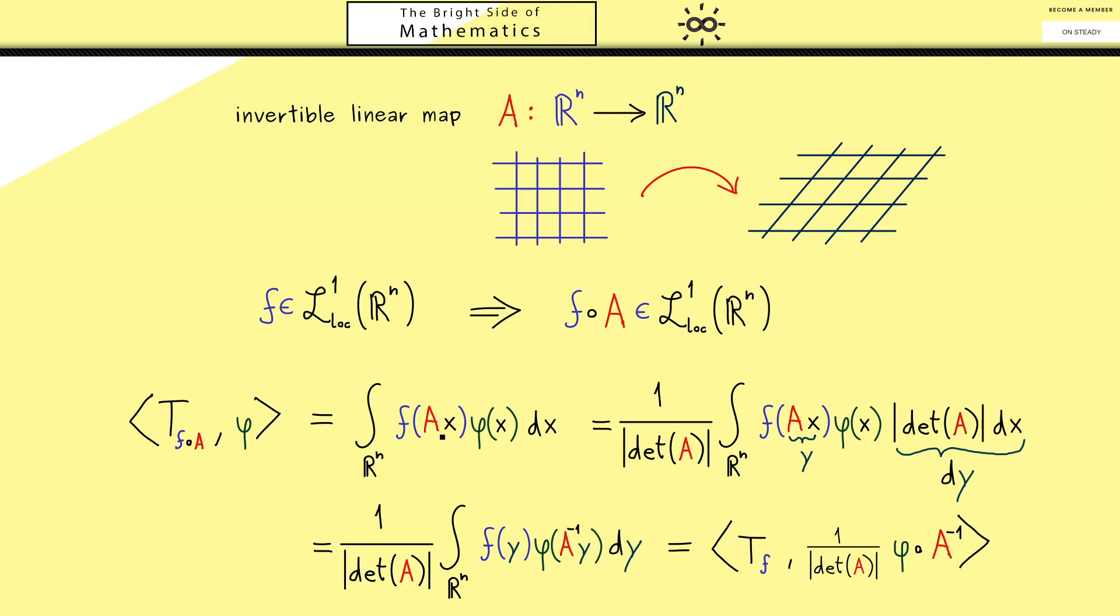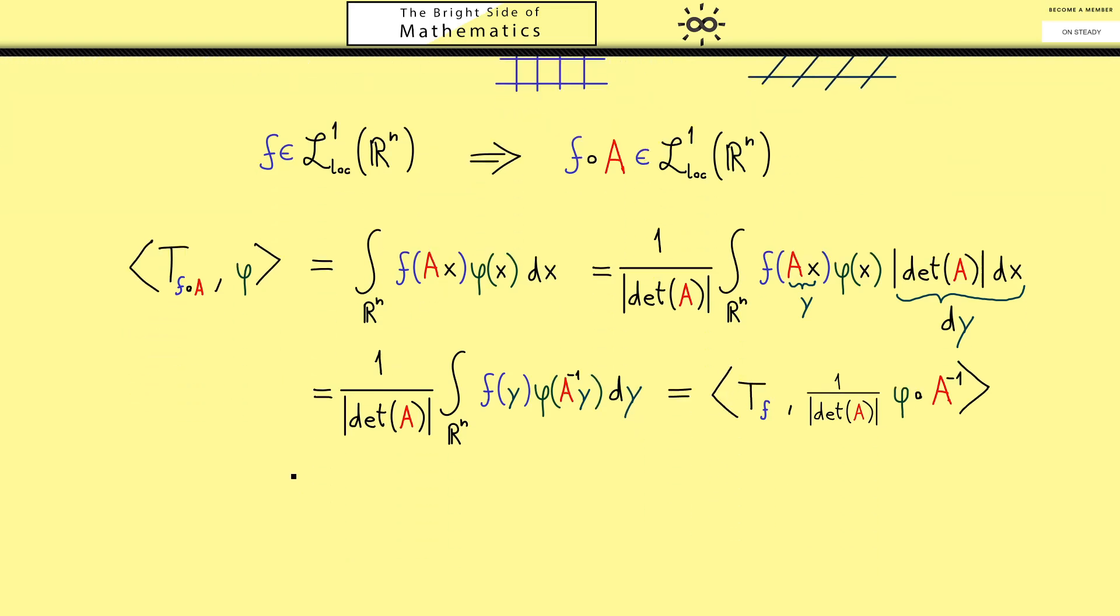Hence let's put this into a definition. So this one works for each distribution T and linear map A. However as before A should be invertible. Ok and then we can define a new distribution we call T after A.